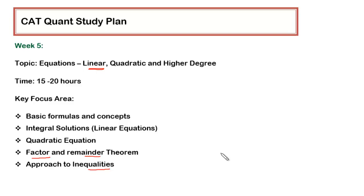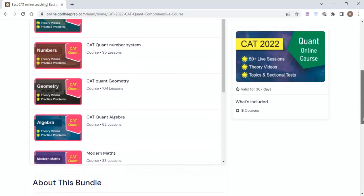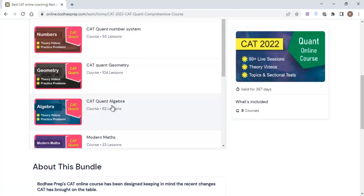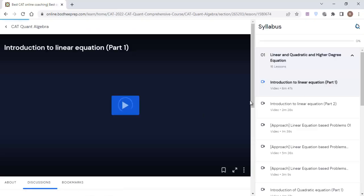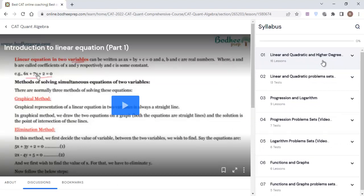Now let me show you where you will find this in the course and what you have to do. Once you log in, you'll get into this course. Within that, go to CAT Quant Algebra folder. In this folder, you'll find all these topics - everything is given from linear equations, quadratic equations, and higher degree.